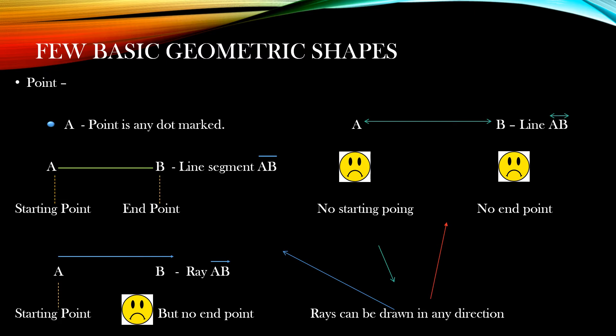Now let's go to line AB. In the ray we extended it towards B, but here we have extended it in both directions — towards A and towards B. So it is extending endlessly and is called line AB. You can see the symbol of line on the top of AB. This is also called line BA, and the third way of naming the line is with a small letter, so you can write line L or line M. So in this slide we learned about point, line segment, ray, and line.